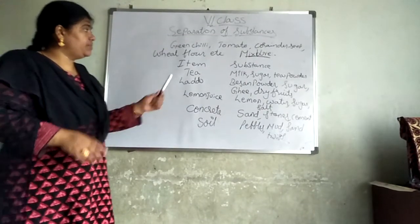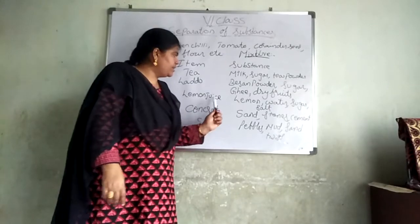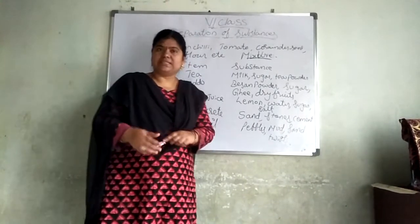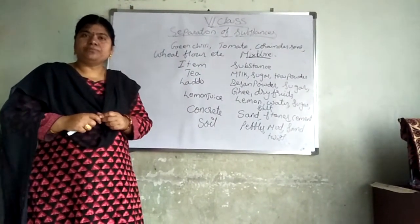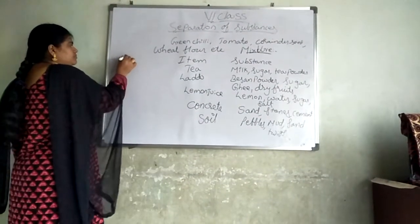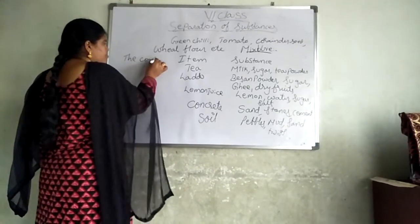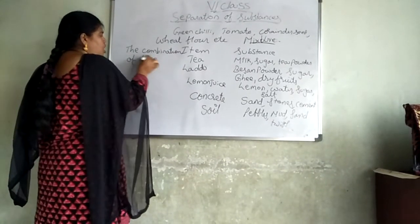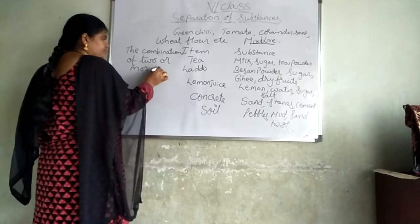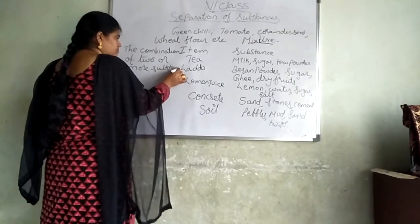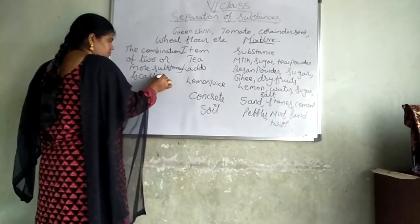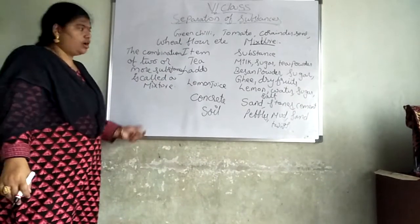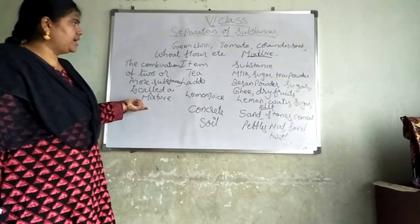What are the things required? Tea needs milk, sugar, tea powder. Laddu needs besan powder, sugar, ghee, dry fruits. Lemon juice needs lemon, water, sugar, salt. Concrete needs sand, stone, cement. Soil contains pebbles, mud, sand, etc. So, the combination of two or more substances is called a mixture.